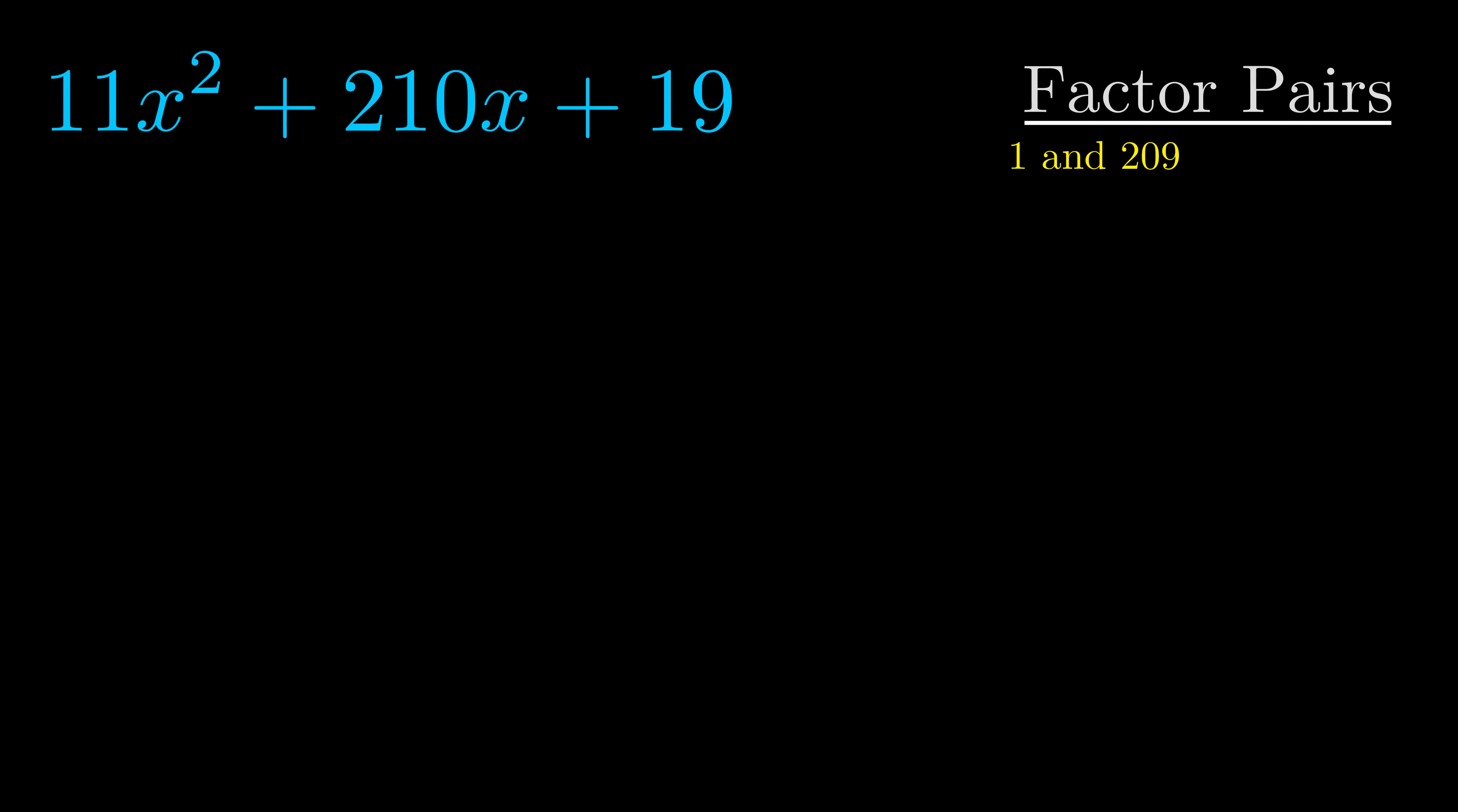Now once we have this factor pair, what we want to do is use it to split up the b value.